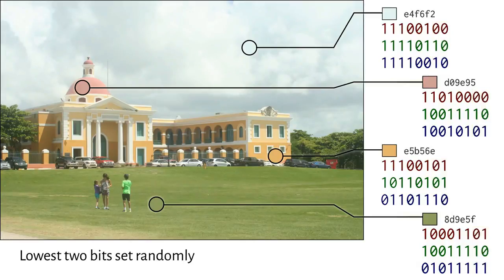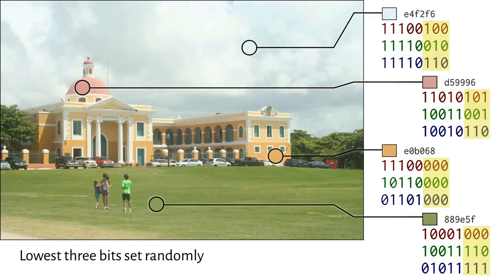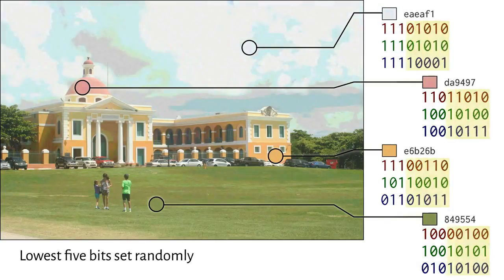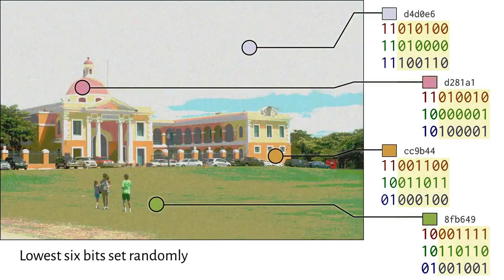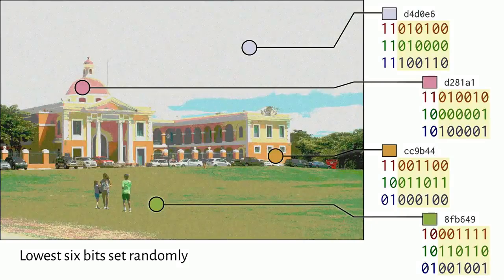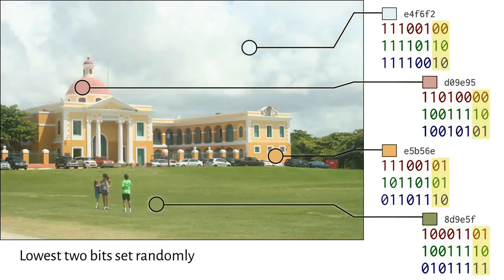When we start to mess with three or more bits, the quality of the image degrades more noticeably. So let's stick to two bits per channel, which is six bits per pixel.